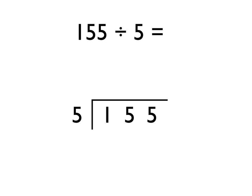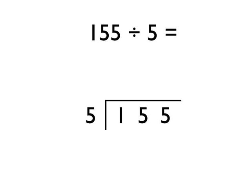Another example now. We're going to do 155 divided by 5. We lay out our workings as before, and then we start on the left-hand side and ask ourselves: how many times does 5 go into this 1? Well, it doesn't go in at all — 5 goes into 1 zero times. So we put the 0 up there. But there's 1 remainder — that 1 left over — so we carry that 1 up here to turn this number into 15.